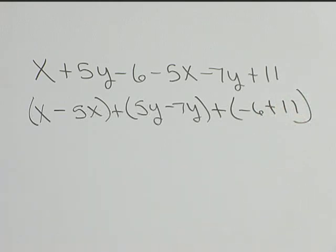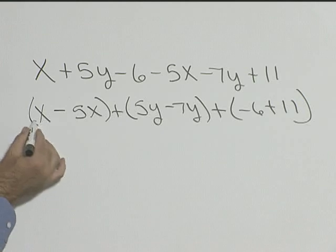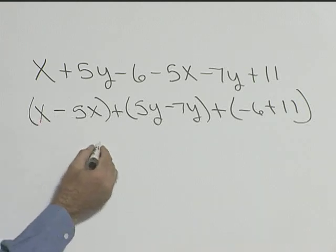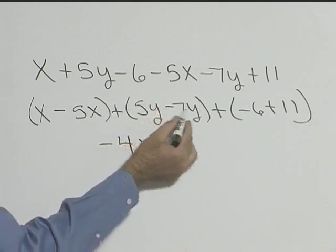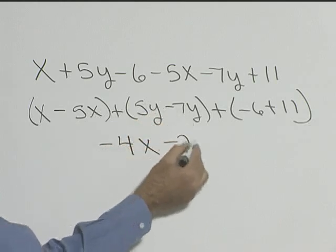So now that we've grouped our like terms, let's combine. This is 1x minus 5x, which gives us negative 4x. Here we have 5y minus 7y, so that gives us negative 2y.